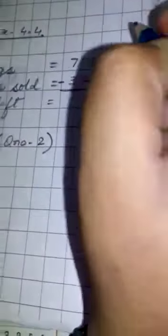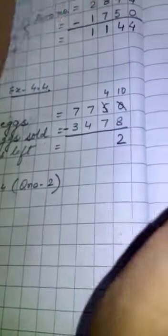Now 0 minus 8, possible? No, not possible because 0 is smaller than 8. So you have to borrow it, so it will become 10 and this will become 4. So what comes after 8? You start counting from here, 9, 10. So where you will get 10? In second place. So 2 is your answer.